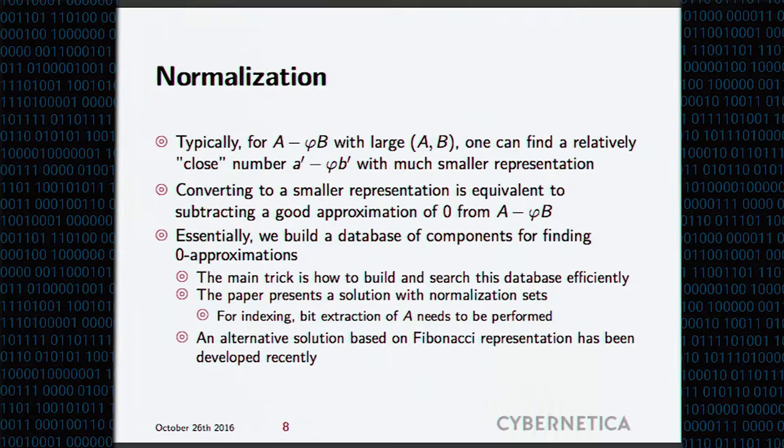Remember, these A's and B's are all in the protected domain. They're either encrypted, either secret shared, you cannot access them directly. So you have to somehow understand what is a good approximation of zero that you could subtract from your big representants to get a normalized version of your number.